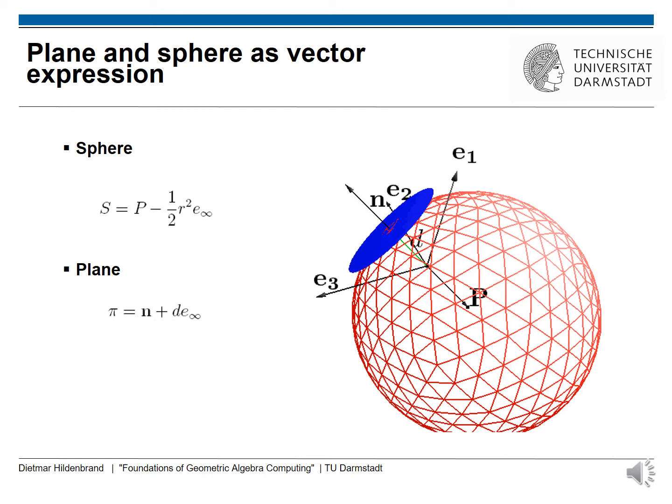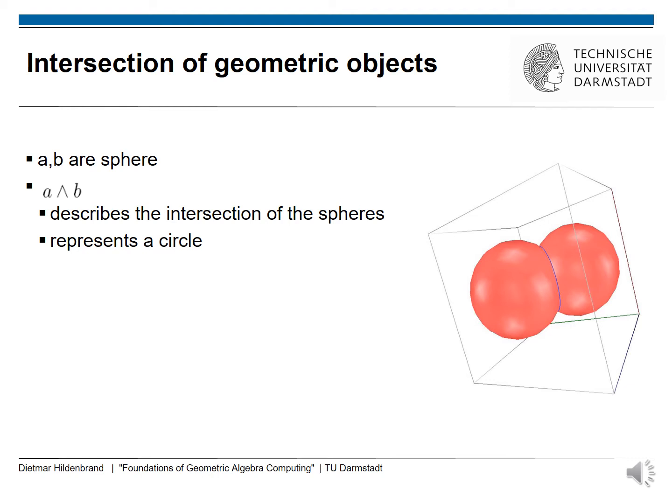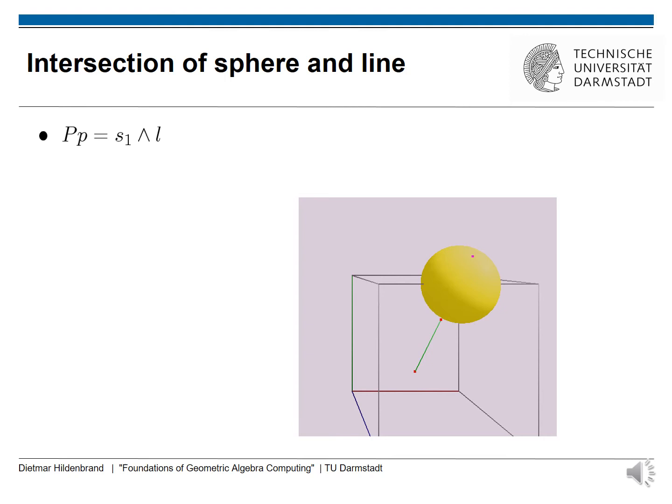If we look at the algebraic expression of a plane, we can see it consists of the normal vector N plus the distance D to the origin times E-infinity. Intersections of geometric objects can be handled very easily in conformal geometric algebra. For instance, if we have two spheres A and B, simply the outer product A∧B describes the intersection of the spheres, meaning A∧B represents the intersecting circle.